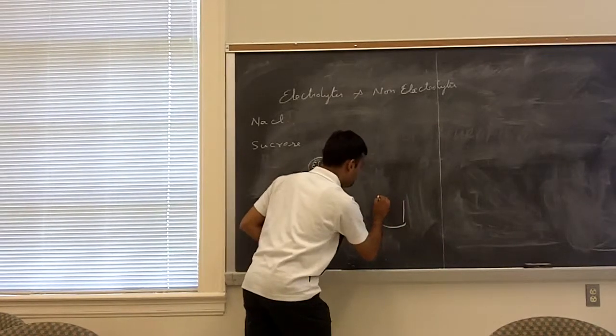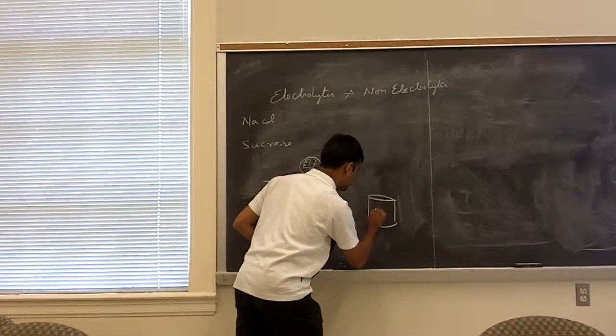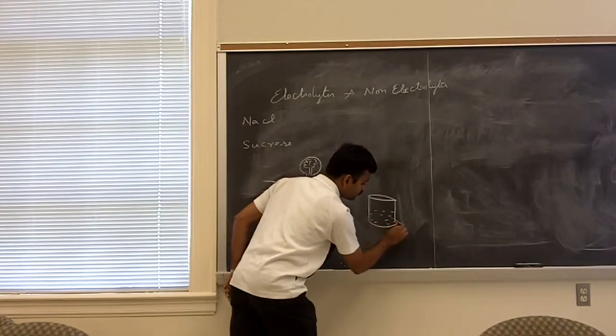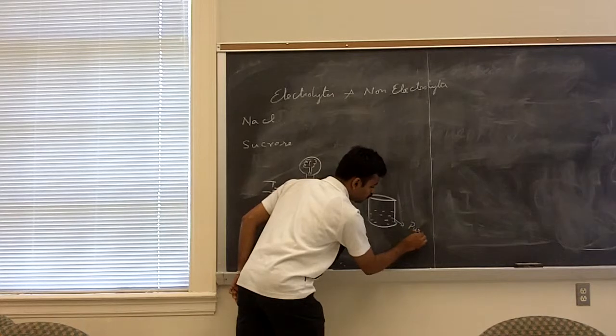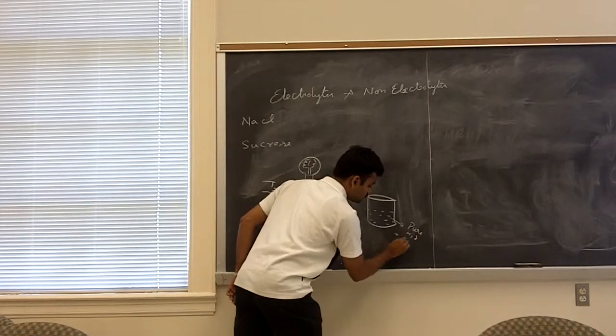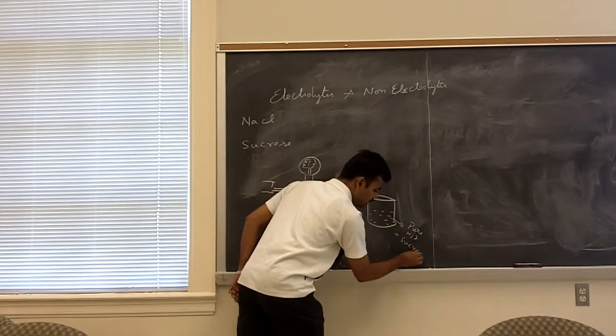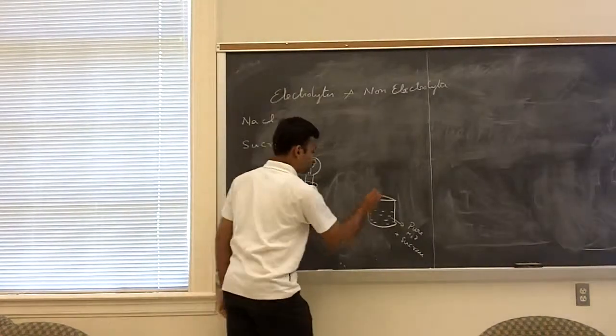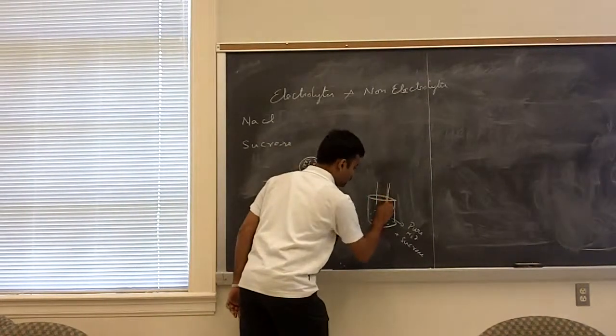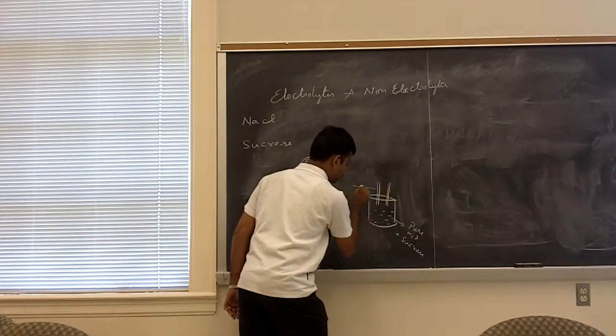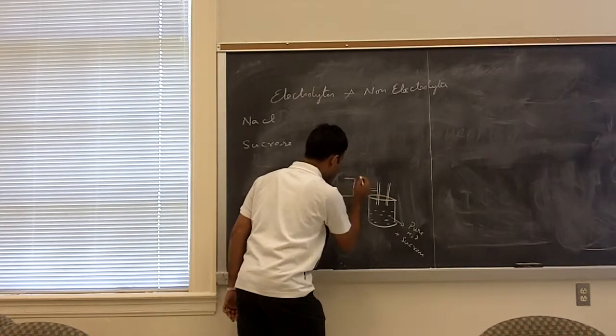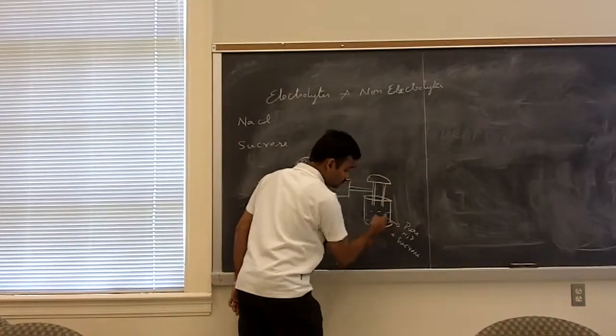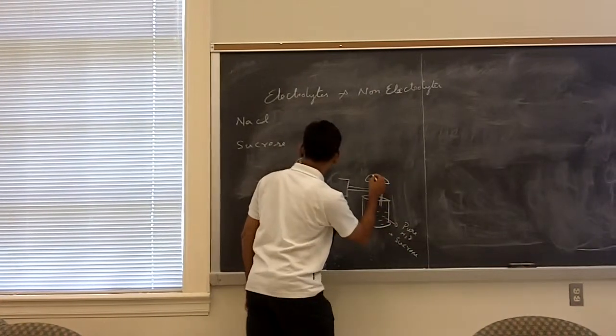So I take another beaker of water. But this time, I add pure water along with sucrose, which is a normal sugar, which we use daily. Right? So the same setup. No difference between these two diagrams except you add sugar into this beaker.